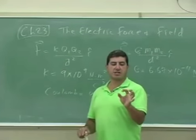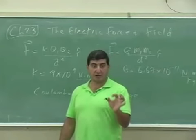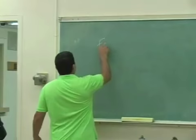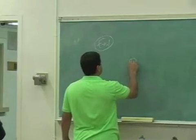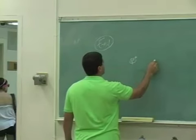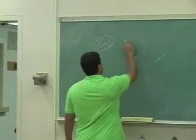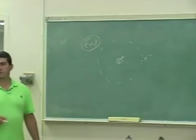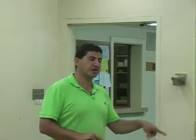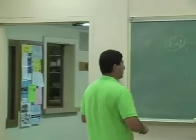Let's take the proton and the electron inside of a hydrogen atom. We have one proton and one electron. Let's find the electrical force between them and also find the gravitational force between them and compare them, so we can get an idea of what they are equal to.